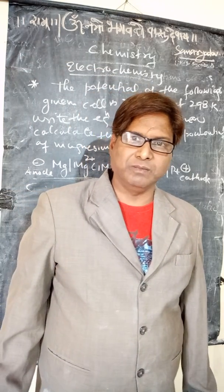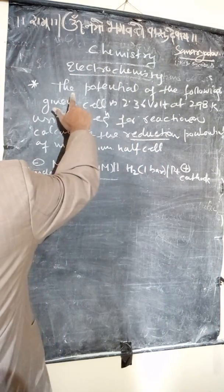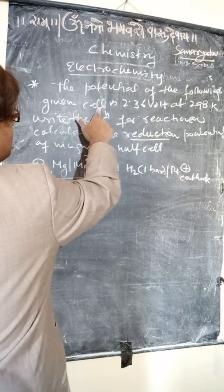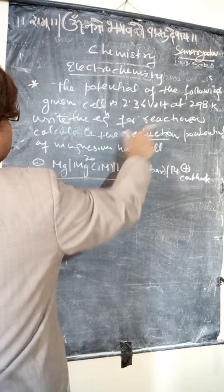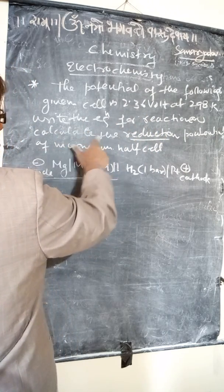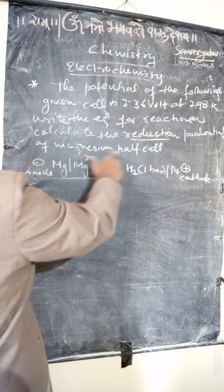In the chemistry chapter on electrochemistry, we'll solve this numerical problem. The potential of the following cell is 2.36 volts at 298 Kelvin. Write the equation for the reaction and calculate the reduction potential of the magnesium half cell.